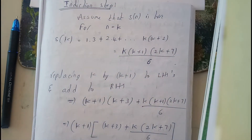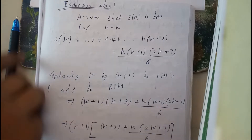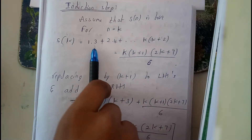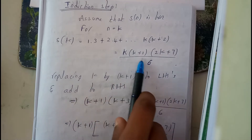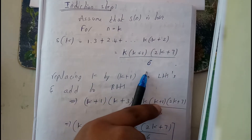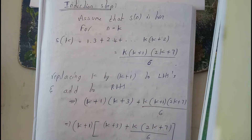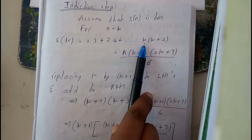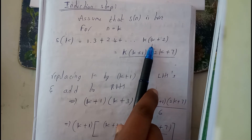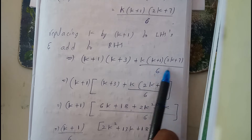For the induction step, assume n = k. So S(k): 1×3 + 2×4 + ... + k×(k+2) = k(k+1)(2k+7)/6. Now replacing k with k+1, the next term becomes (k+1)(k+3). We add this term to the RHS — remember, you replace k with k+1 here and also add the (k+1)th term to the RHS.